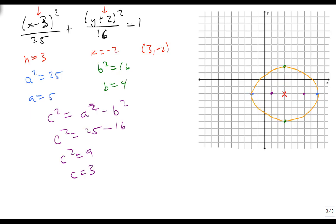And we have translated this ellipse from 0, 0 to 3, negative 2 and have kept the rest of it intact.